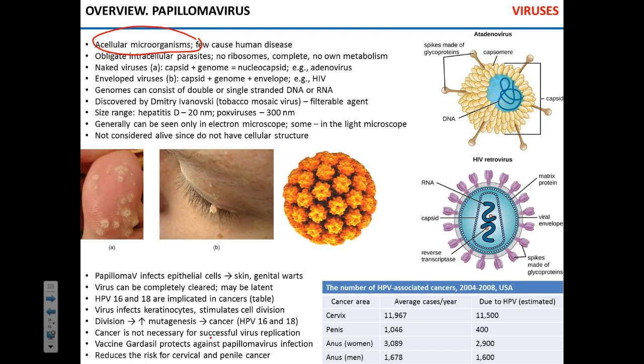How many viruses are there? Nobody really knows. The vast majority — I'm talking 99% — are not yet discovered. We have classified about 10,000 virus species. Very few cause human disease; there are about 250 viruses that we know of that actually cause human disease. Don't memorize the number — I'm just telling you it's not a lot. The majority of them are absolutely benign.